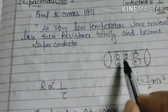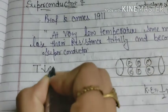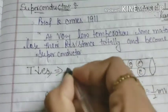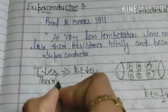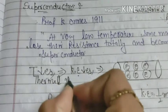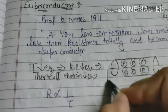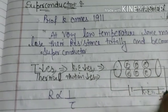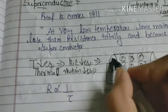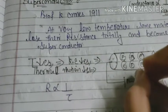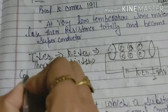अगर हम temperature को decrease करेंगे तो kinetic energy decrease होगी। Kinetic energy decrease होने से thermal motion of electrons decrease होगी। Thermal motion decrease होने से electrons slowly आएंगे, और slowly आने से relaxation time की value increase होगी — electrons easily collide नहीं कर पाएंगे।